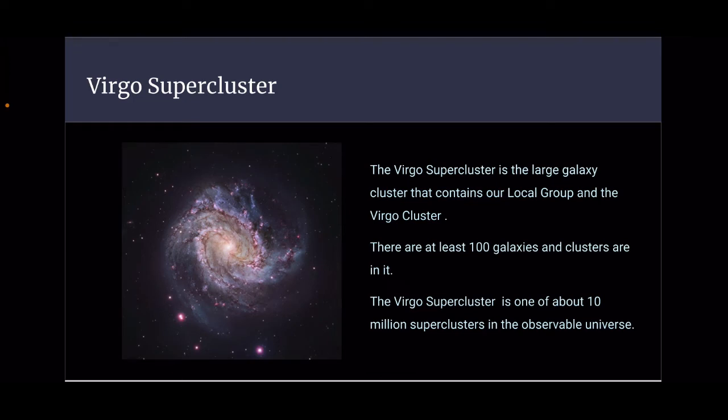The Virgo supercluster is the large galaxy cluster that contains our local group and the Virgo cluster. There are at least 100 galaxies and clusters in it. The Virgo supercluster is one of about 10 million superclusters in the observable universe.